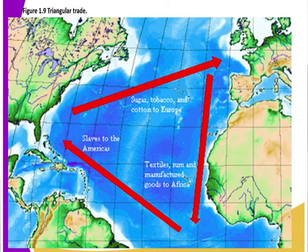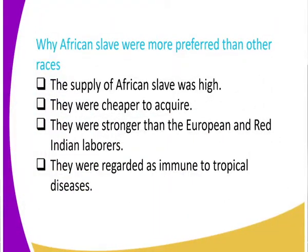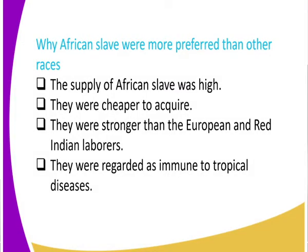Why were African slaves preferred? Slaves from Africa could provide cheap labor, unlike Europeans who required large sums of money. Africans were also physically strong compared to Europeans and the Red Indians, who were considered weak. Finally, Africans were immune to tropical diseases such as malaria and tuberculosis, so they could effectively work in the plantations in South America.